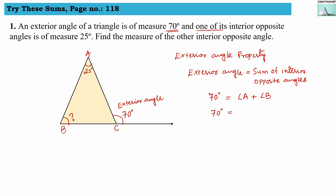So 70 degrees equals angle A plus angle B. We know angle A is 25 degrees, so 70 minus 25 equals angle B. Therefore angle B equals 45 degrees. This interior opposite angle's measure is 45 degrees.